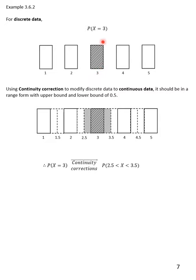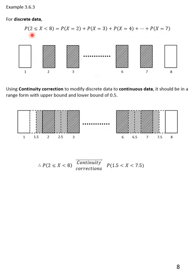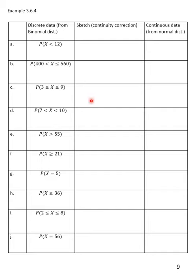For P(X = 3): since it is a single discrete value, you must apply both the lower boundary and the upper boundary. After continuity correction, P(X = 3) becomes P(2.5 < X < 3.5) — refer to the diagram. For P(2 ≤ X < 8): 2 is included, 8 is not, so the discrete values are 2, 3, 4, 5, 6, 7. Apply the lower boundary of 2, giving 1.5, and the upper boundary of 7, giving 7.5. After continuity correction: P(1.5 < X < 7.5).